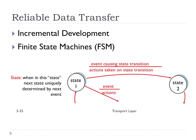The book explains this using finite state machines where the protocol is in certain states. When events happen, actions occur and we may move between states. We're going to incrementally develop a reliable data transfer protocol — starting with something very simple, adding a problem, solving it, adding another problem, solving it. In the end, we'll have a protocol that can handle a very unreliable channel and get data across reliably. We'll then use that in the next section to talk about how TCP does the same thing using similar principles.